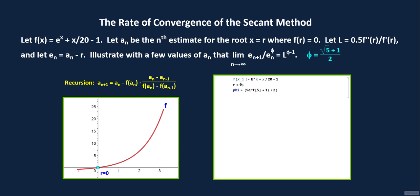We then have the starting values for the recursion. Since f prime and f double prime are both greater than 0, we choose a sub 1 and a sub 2 to the right of the root r equals 0. Let's try a sub 1 equals 3 and a sub 2 equals 2.